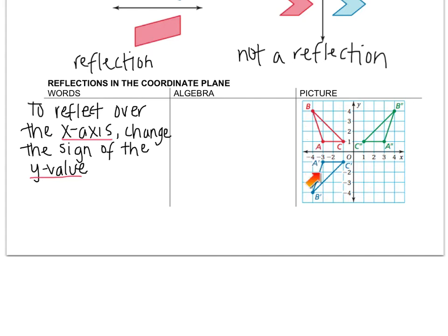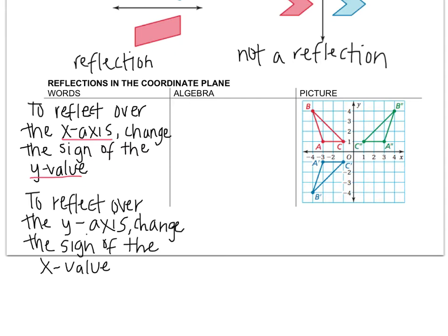So to do the opposite, to reflect over the y-axis, hopefully you're realizing that you're going to change the sign of the x value. So we're keeping the y-axis the same and changing the x value.